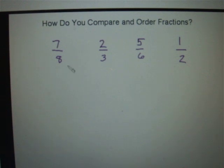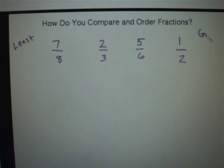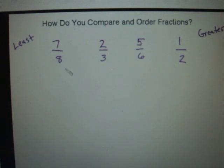This time we're going to compare four fractions — 7/8, 2/3, 5/6, and 1/2 — and order them from least to greatest. All of our denominators are different, so our first step is to find a common denominator that is a multiple of 8, 3, 6, and 2. All four of those numbers divide evenly into 24, so we're going to convert all of our fractions into twenty-fourths.